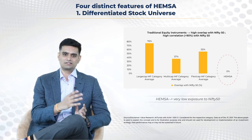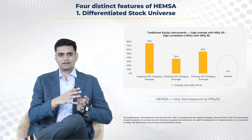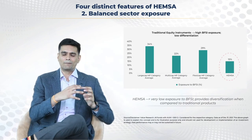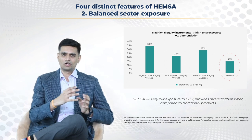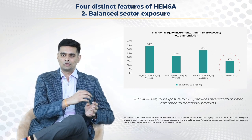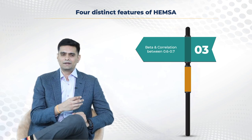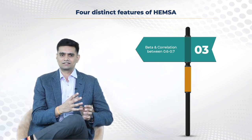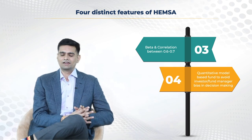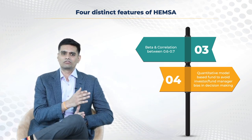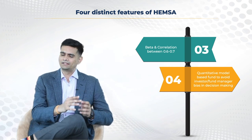There are four distinct differentiating features. First, our portfolio is very different from the Nifty 50 exposure that most investors tend to be over-allocated to. Second, we have a much more balanced sectoral exposure and don't have heavy exposure to banking and financial services stocks, which balances out an investor's overall portfolio. Third, we run a market beta and correlation with respect to the market of between 0.6 and 0.7, adding strong diversifying characteristics. Finally, everything runs quantitatively through a system, ensuring no investor or fund manager bias enters the investment decision-making process.